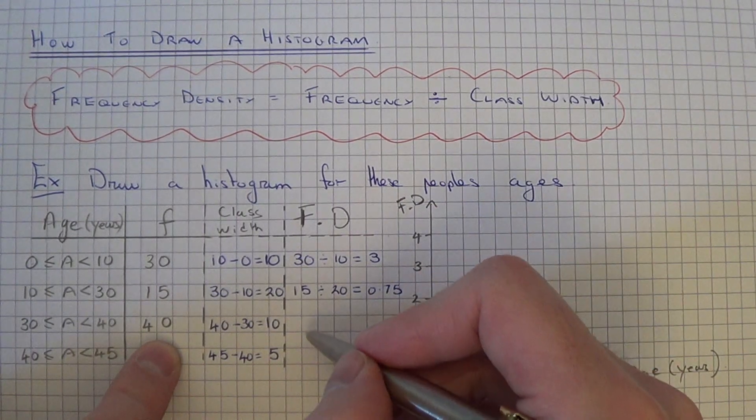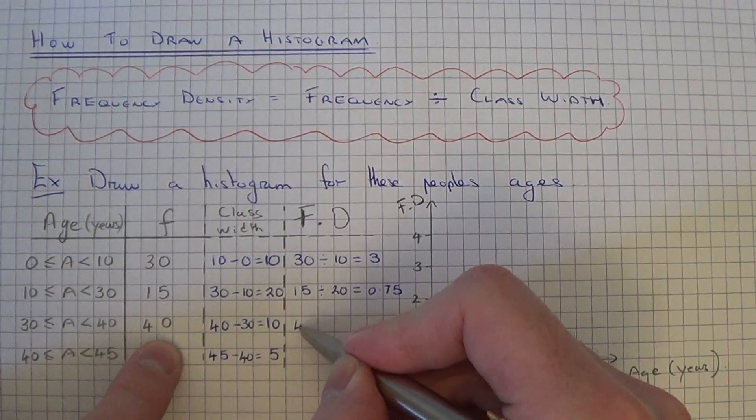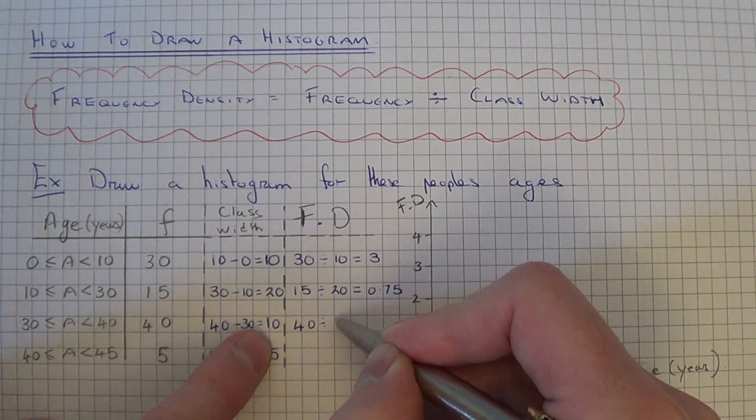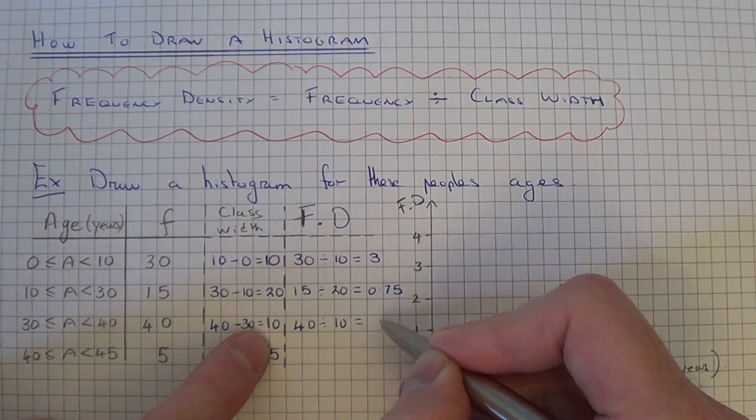For the third group, this will be 40 divided by 10, which is 4.